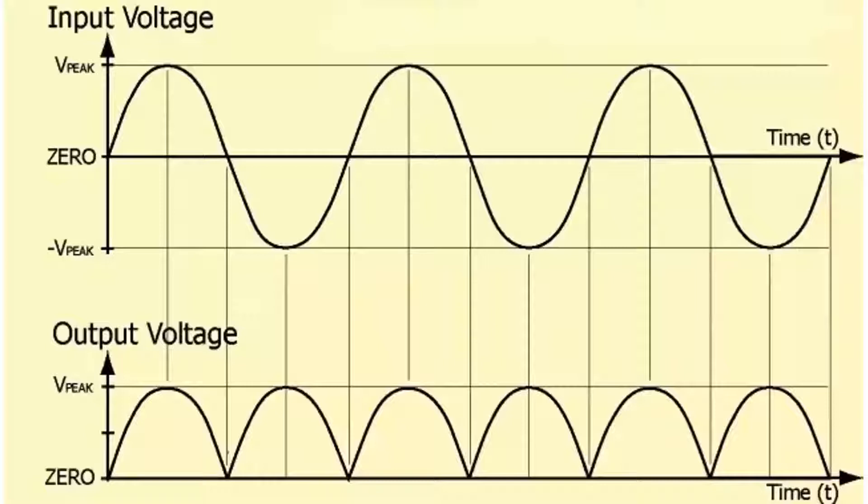The output of the rectifier is DC, that is of single polarity but pulsating in nature. It contains DC component and unwanted ripple. This pulsating ripple is removed by using filter capacitors.